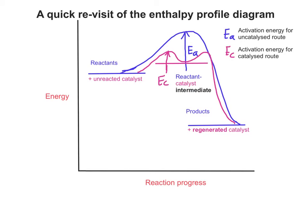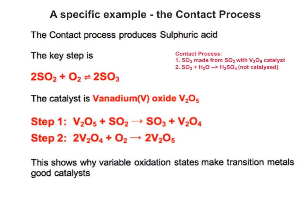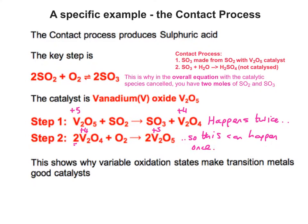Let's look at a specific industrial example: the contact process. You don't need to remember the exact details, but the fact that it uses vanadium pentoxide, V2O5, is useful because you can see the changes in oxidation state for vanadium. You might be asked to prove that vanadium is acting as a catalyst — not just that it's regenerated at the end, but that it changes and then changes back. Step one happens twice because step two requires two V2O4 to make two moles of V2O5. That's why in the overall equation, with the catalytic species cancelled, you end up with two moles of SO3.